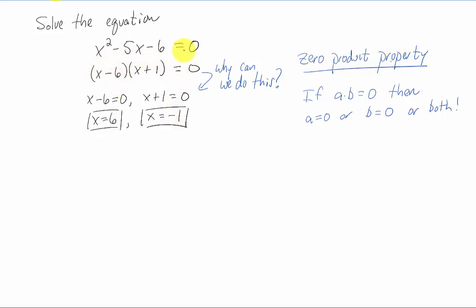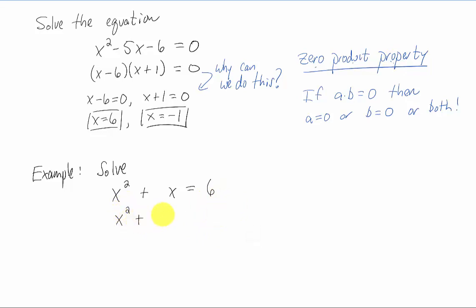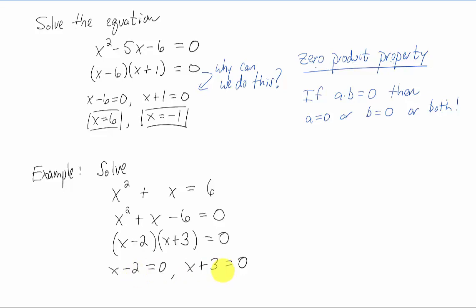If you've taken an algebra class, you know there's always more than one way to solve an equation. In this section, we are only talking about how to solve equations using factoring. Here's another example: solve x squared plus x equals 6. We want to use the zero product property, so we always need zero on one side. Subtract 6 from both sides first. Now we can factor — you get x minus 2 times x plus 3. Apply the zero product property, split into two pieces, and each gives us an answer. Every problem in this section goes exactly like that.